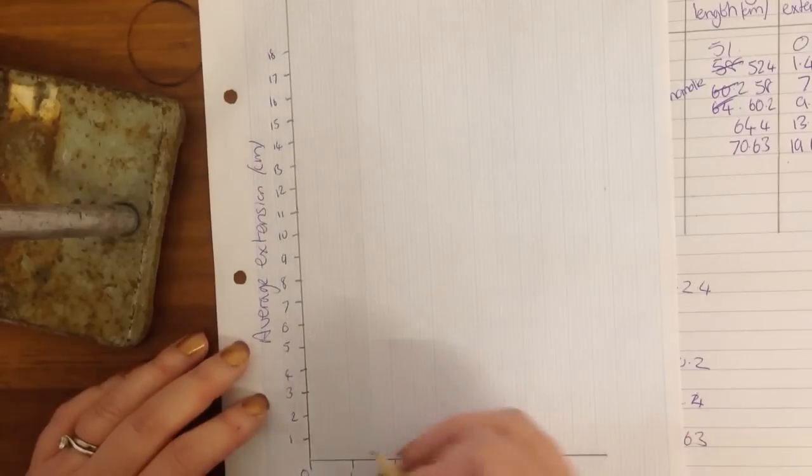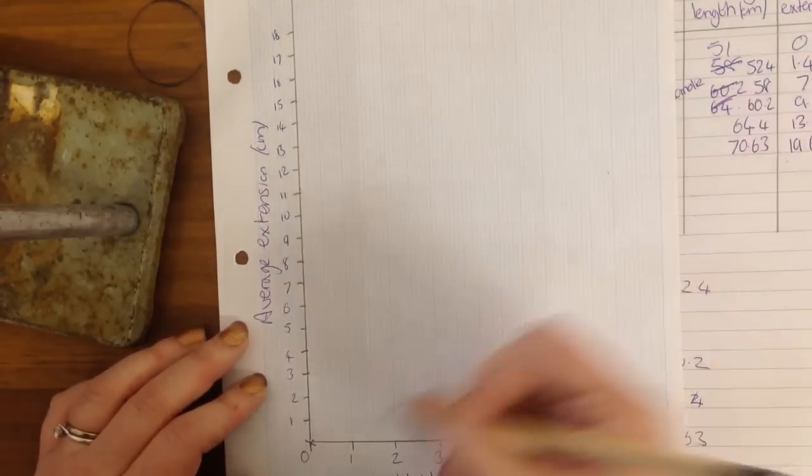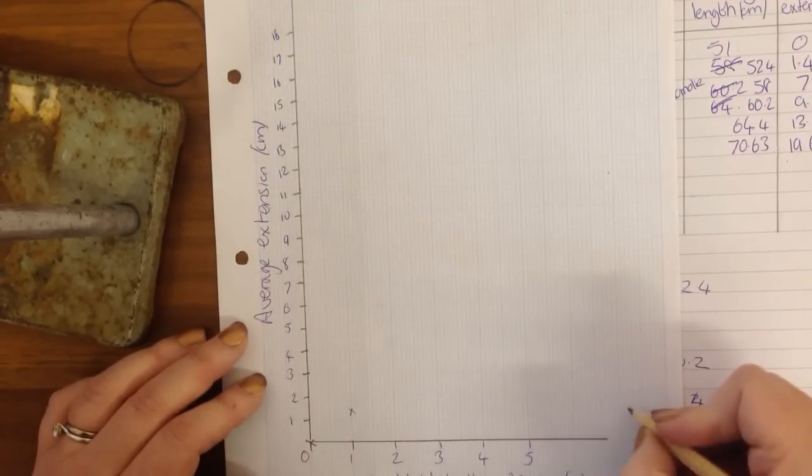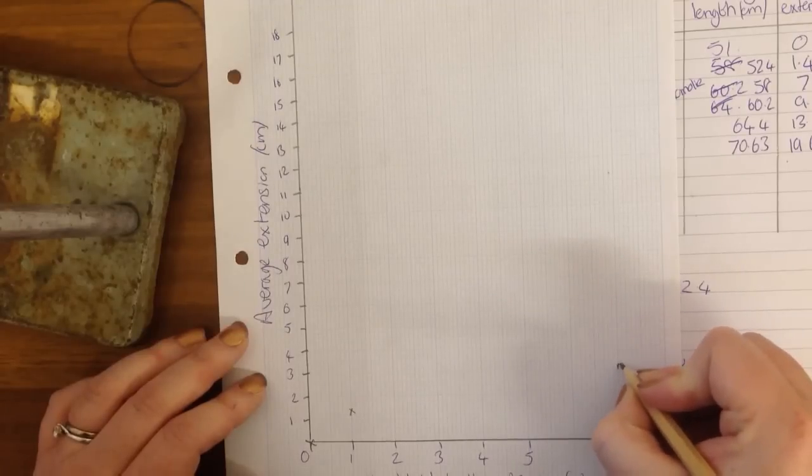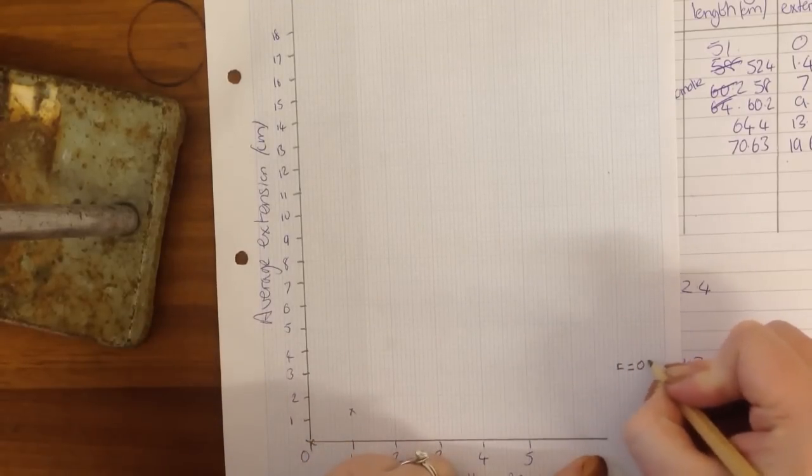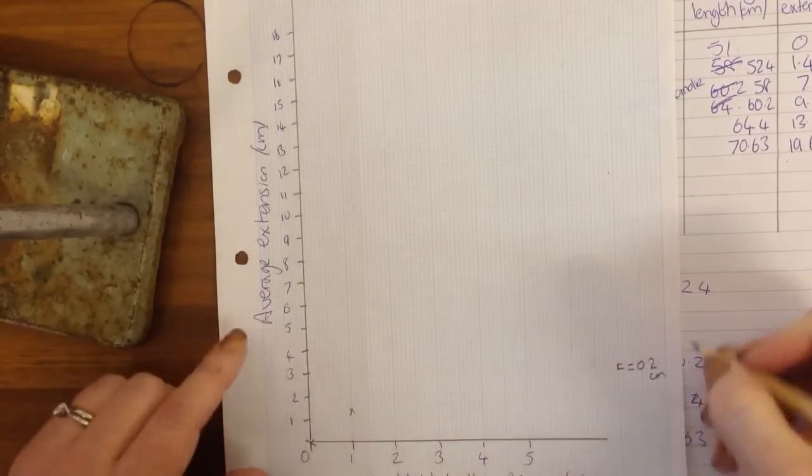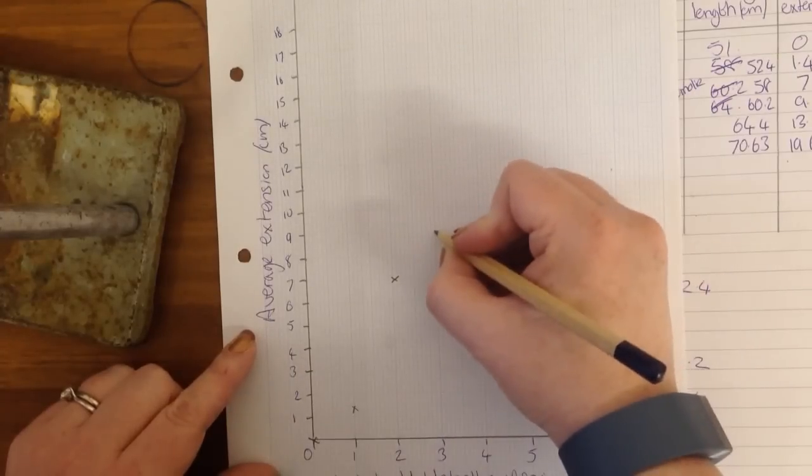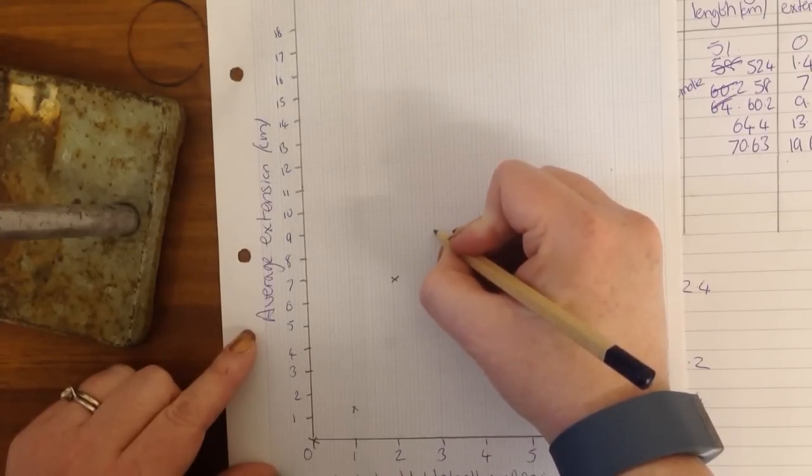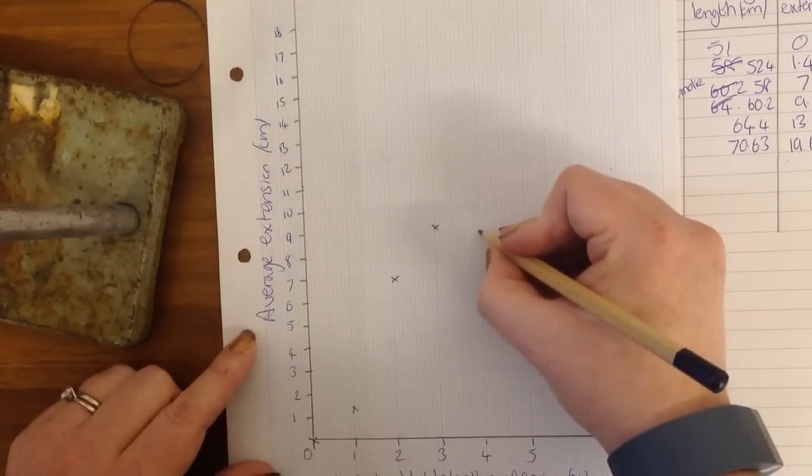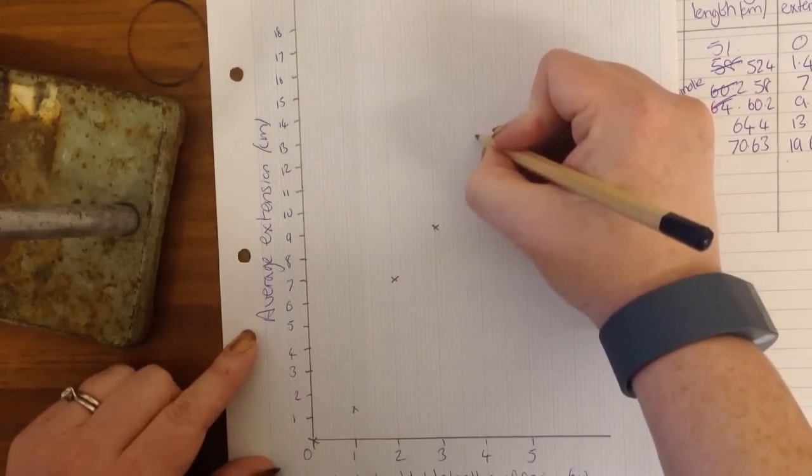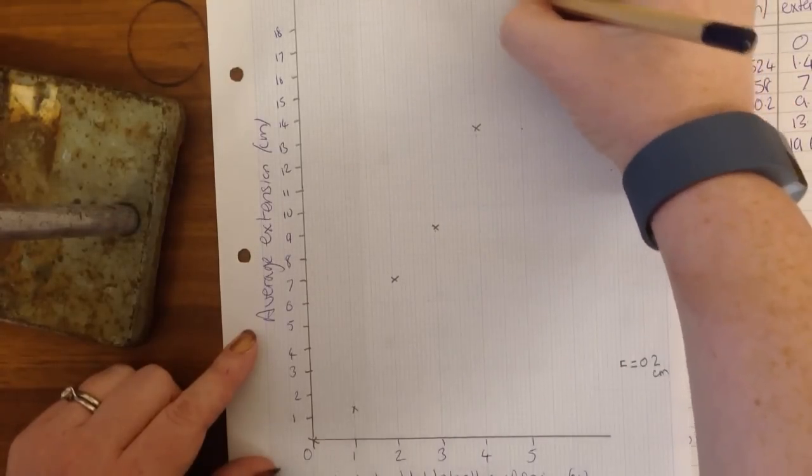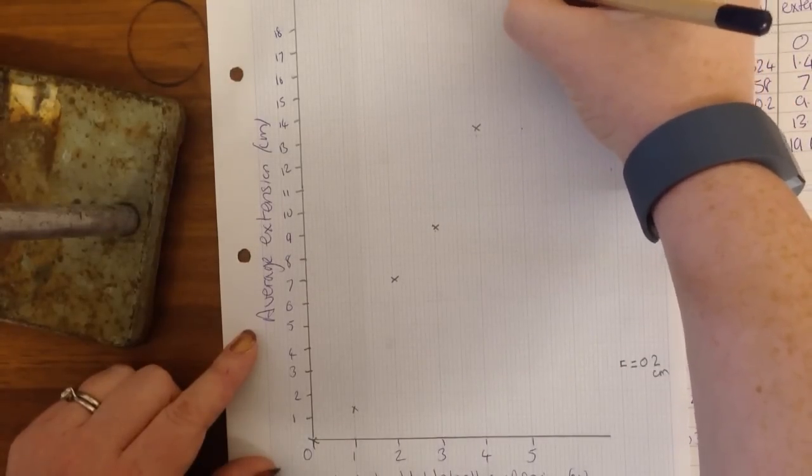And I'm going to show you how to plot a graph. So at 0 newtons, we had 0 extension. At 1 newton, we had 1.4. And each little square up is worth 0.2 centimeters. So I've done it 2 little squares up. 2 newtons was 7 centimeters. 3 newtons was 9.2 centimeters. So I do 1 little square up, 4 newtons was 13.4, 5 newtons was 19.6.